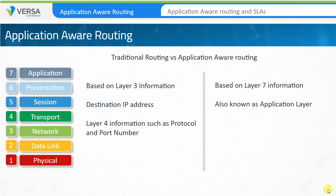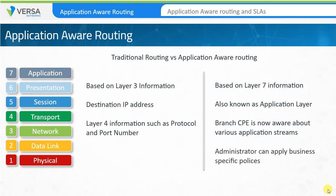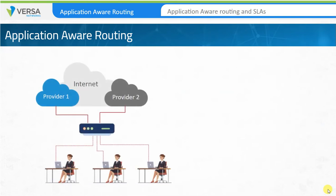This allows a branch CPE to be aware of various application streams present in the network. Administrators can then apply business-specific policies to those streams. A simple example would be preferential treatment to business-critical traffic, such as Office 365 traffic, over non-critical traffic, such as Facebook or YouTube traffic.